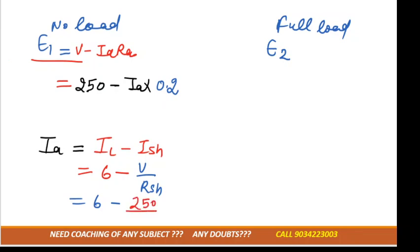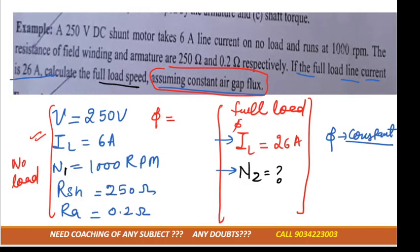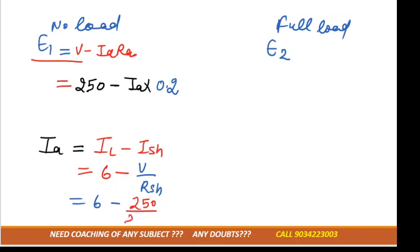Ish we have formula that is V/Rsh. So 6 minus voltage we know that is 250 volt and Rsh also they have mentioned that is again 250 ohm. So 250/250 is 1, so 6 minus 1 is 5. So Ia value will get as 5. So 250 minus 5 × 0.2, here from this we will get the value of E1.